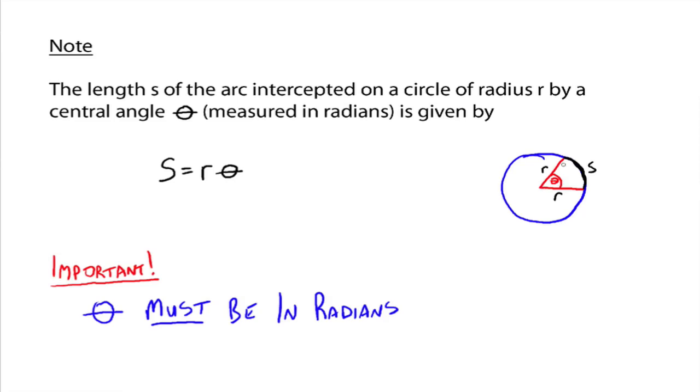So the length of this is given by the formula R times theta. Your radius, whatever your radius is, times theta, and theta, very important, theta must be in radians, cannot be in degrees. So here's our first formula where it's a very simple formula if theta is in radians, rather than degrees. If it's in degrees, it's not going to look quite as simple. So very nice formula, S equals R theta.